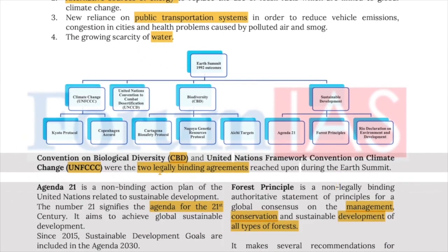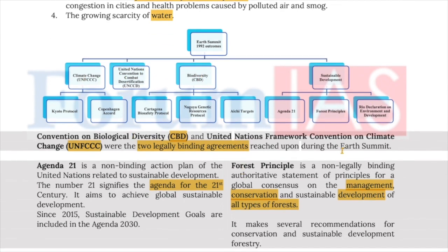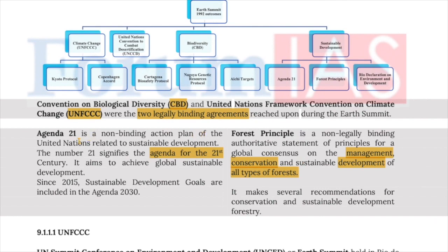The Convention on Biological Diversity (CBD) and the United Nations Framework Convention on Climate Change (UNFCCC) were two legally binding agreements reached during the Earth Summit itself. Agenda 21 is a non-binding action plan for the United Nations related to sustainable development; the number 21 signifies the agenda for the 21st century. Since 2015, sustainable development goals are included in Agenda 2030.